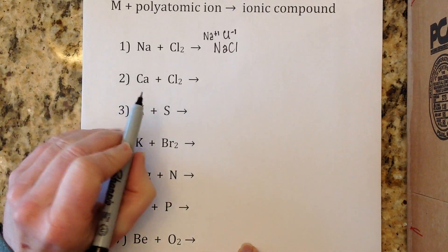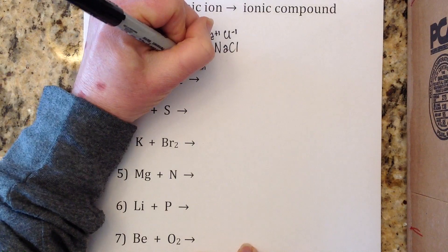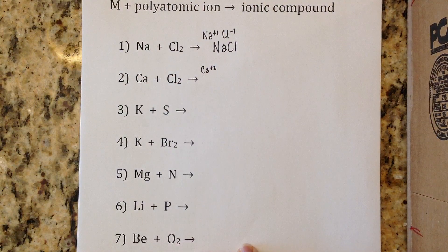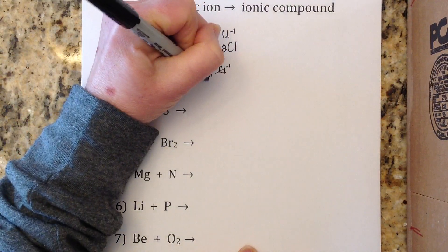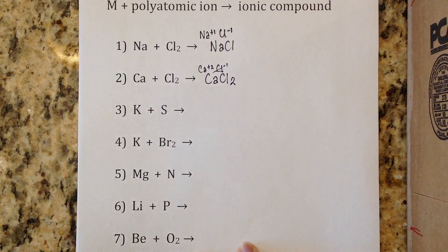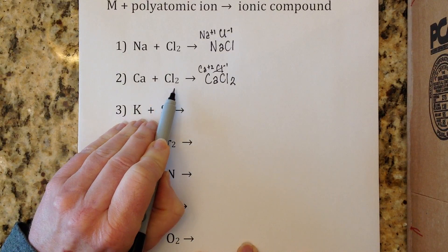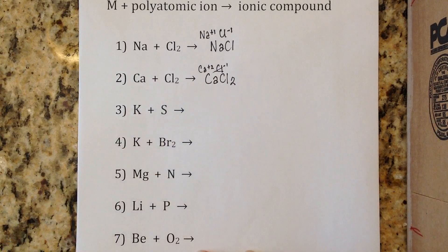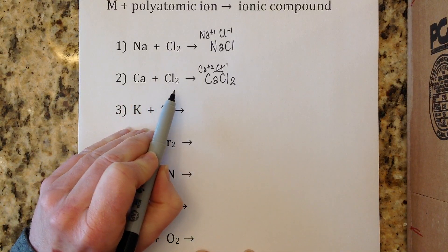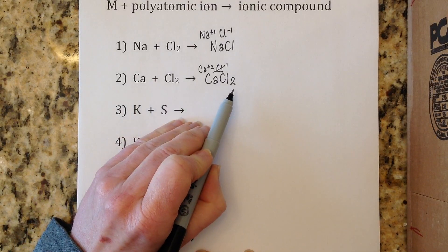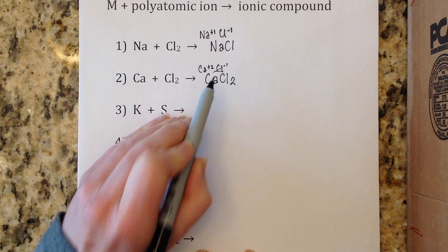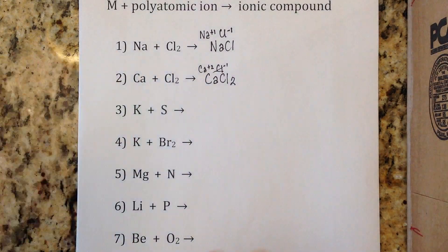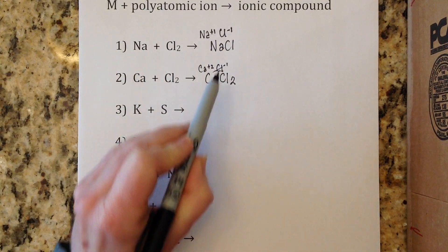Number two: calcium metal reacting with chlorine gas. Calcium has a plus two charge, and chloride is Cl⁻¹. Crisscrossing gives you CaCl₂. The subscript 2 on Cl₂ in the reactants is not the same as the subscript 2 in CaCl₂. The first 2 is there because chlorine is one of the special seven diatomic gases. The second 2 is a result of the crisscrossing of the ions. It's very important to remember these are two different things.